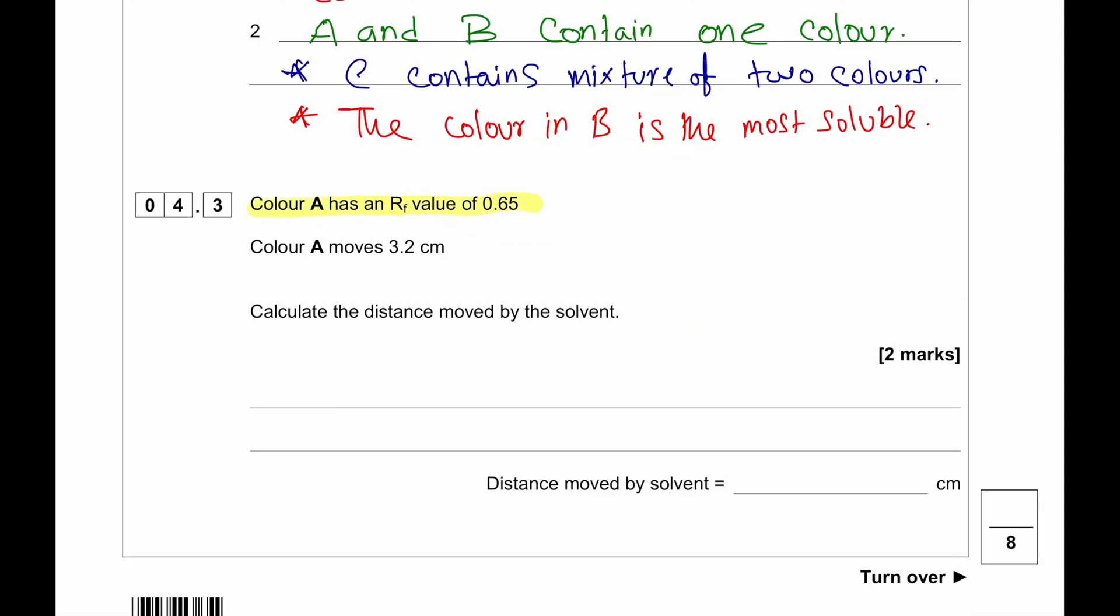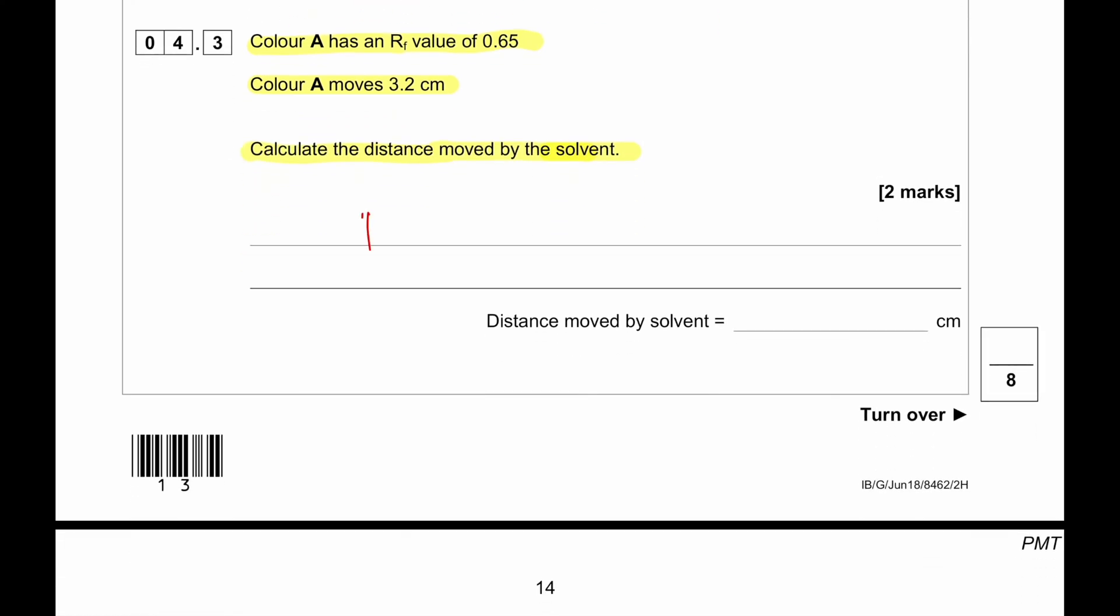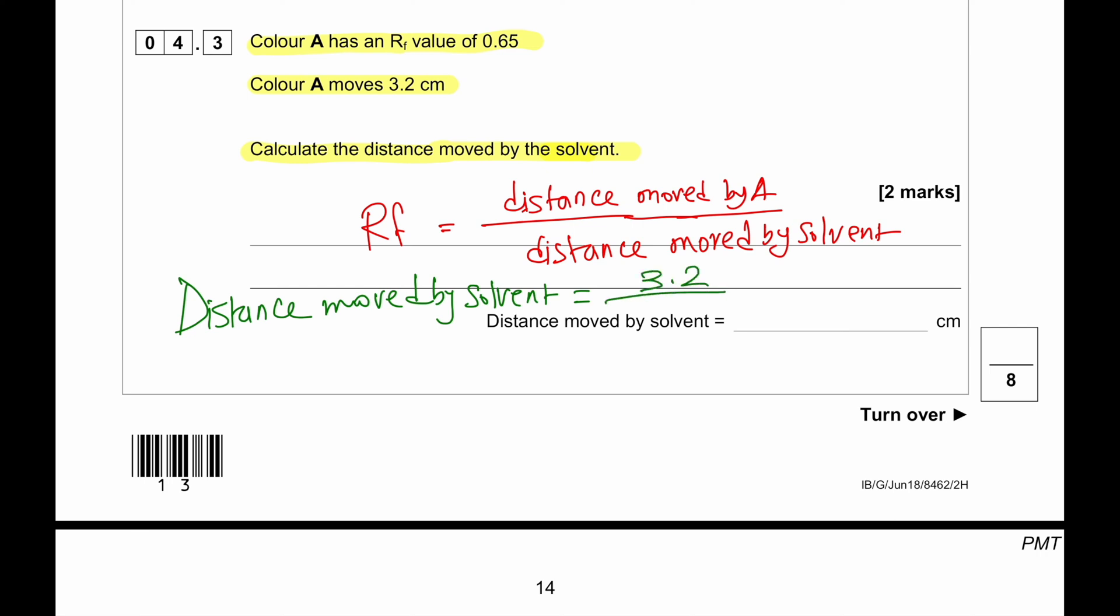Color A has an Rf value of 0.65. Color A moves 3.2 centimeter. Calculate the distance moved by the solvent. We know Rf equals to distance moved by A divided by distance moved by solvent. So, when we are going to do distance moved by solvent, it's going to be distance moved by A which is 3.2 divided by Rf which is 0.65. So, it's 4.9 centimeter.